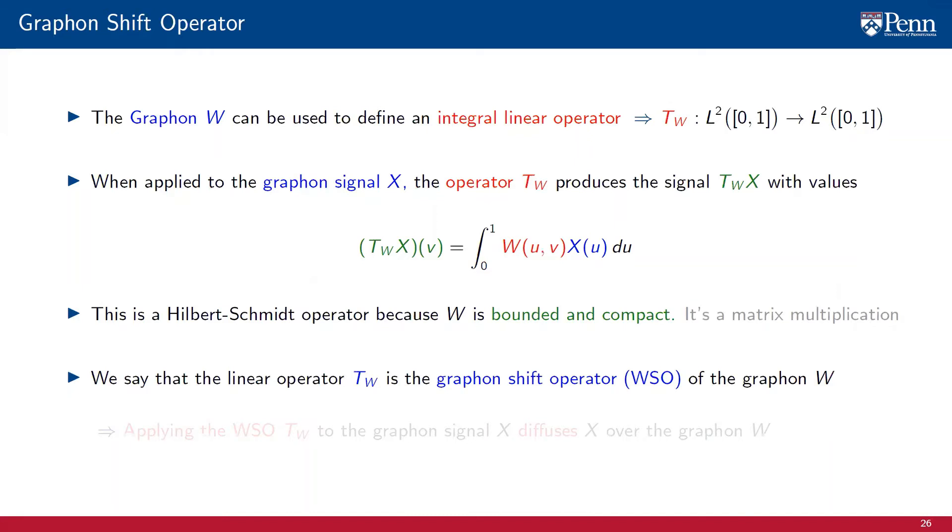Drawing on the proximity of the operator T_W with matrix multiplications, we call it here the graphon shift operator (WSO) of the graphon W. Applying the WSO T_W to the graphon signal X has the effect of diffusing the signal X over the graphon W. We know that this is true intuitively because the definition of the WSO is akin to a matrix multiplication. We will show that it is true formally when we get to studying graphon filters.